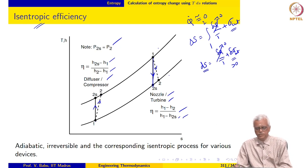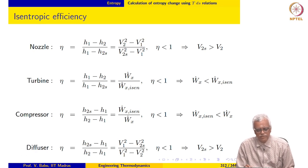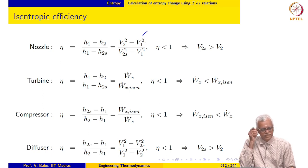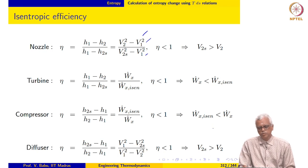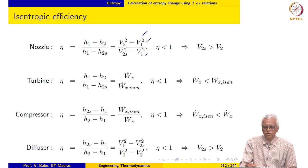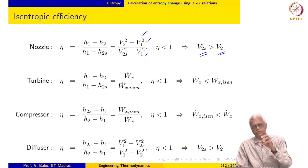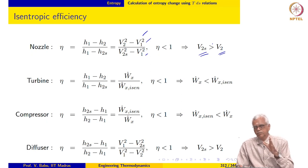Looking more closely at these expressions: for a nozzle, the isentropic efficiency is (H1 − H2)/(H1 − H2S), which using the steady flow energy equation represents the change in kinetic energy in the real process in the numerator and the isentropic process in the denominator. Since efficiency must be less than or equal to 1, we know that V2S is greater than V2 — meaning the isentropic process converts enthalpy to kinetic energy more effectively, producing a higher exit velocity. V1 is the same in both cases and we expand to the same final pressure.